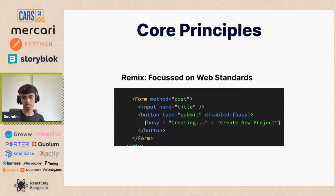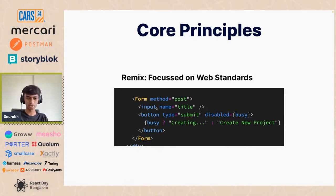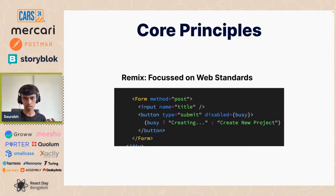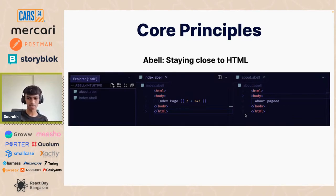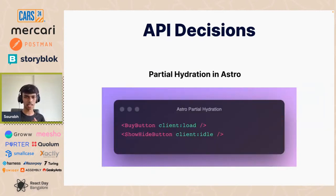There are also non-subjective things, like core principles. Remix, for example, focuses on web standards. Their Form component — form method post — looks just like an HTML form but gives you better user experience and control. They've kept the API very similar to HTML, and I think that's a really cool principle. A tiny plug: my side project Abel also tries to stay close to HTML — you can have two files, index.abel and about.abel, that look very similar to HTML, run with npx, and just work without much setup.